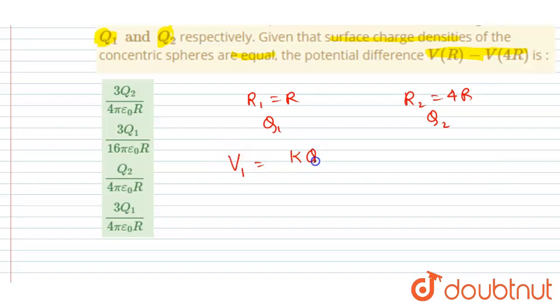And because of the outer sphere, it will also have potential that would be equal to this. And if I write the potential of the outer sphere, so because of its own charge it will have k q2.